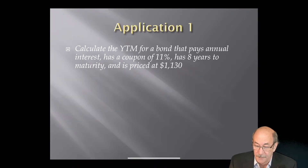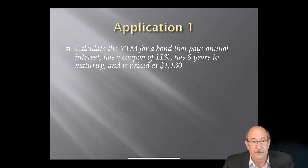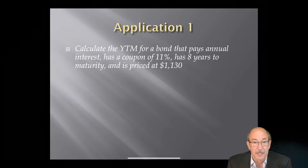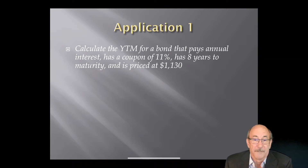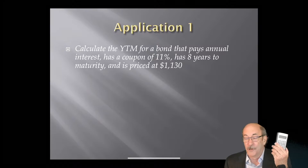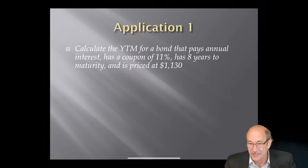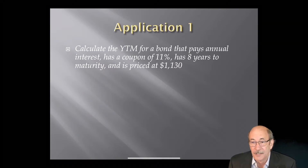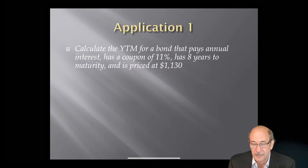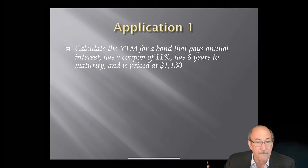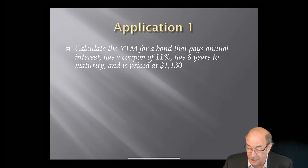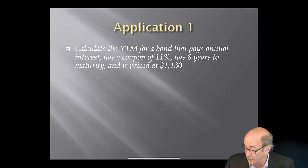This first one really shouldn't give us any difficulty. Let me grab a pencil to jot this down. You always ought to have a financial calculator handy. If not, there's one at calculator.net that does a pretty good job — that's the one I'll be using today. So in this first example, we're looking for a yield to maturity. We've got a bond with a coupon of 11 percent, eight years left to maturity, and currently priced at $1,130.